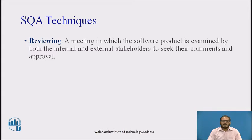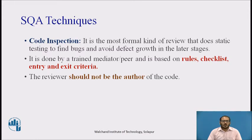Reviewing is another software quality assurance technique — a meeting in which the software product is examined by both internal and external stakeholders to seek their comments and approval. Code inspection is the most formal kind of review; it performs static testing to find bugs and avoid defect growth in later stages. It is done by a trained mediator or peers and is based on rules, checklists, and entry and exit criteria. The reviewer should not be the author of the code.